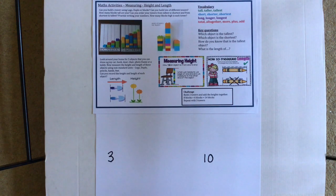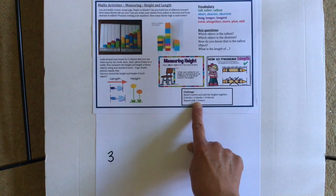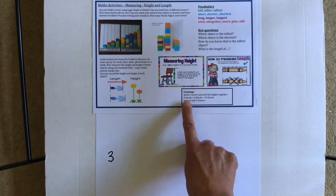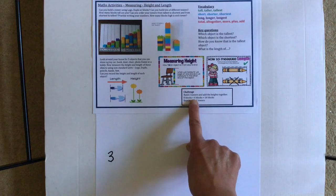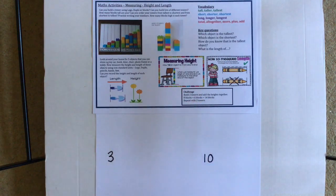So lots of different things to do there. I hope you have lots of fun. Maybe you can send us some photographs of what you've been measuring and you can write the numbers of the unit that you used. There's a challenge on the sheet. It says build two towers and add the heights together.